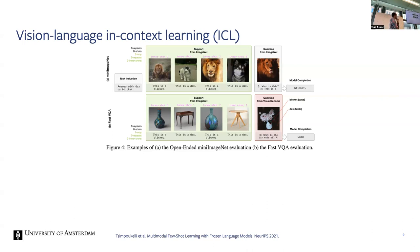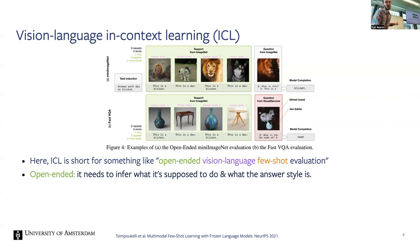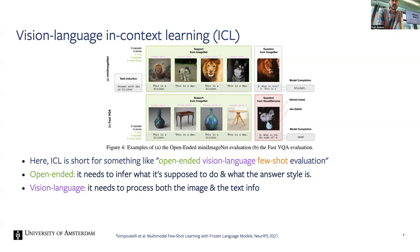Interestingly, replacing real class names like 'lion' and 'husky' with fake names like 'dax' and 'blicket' works better — we'll get into why. The same idea applies for VQA: you ask what something is made of, and the model replies 'wood.' ICL here stands for open-ended vision-language few-shot evaluation: 'open-ended' because the model must infer the answer style without being given options; 'vision-language' because it must process both image and text.